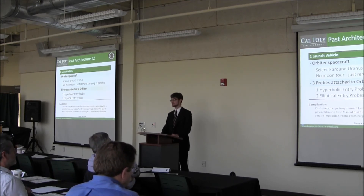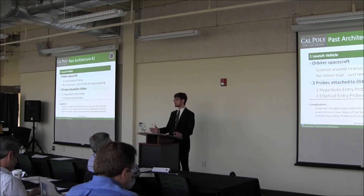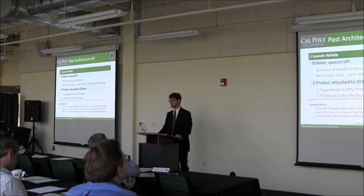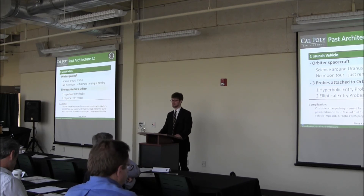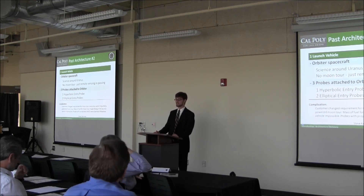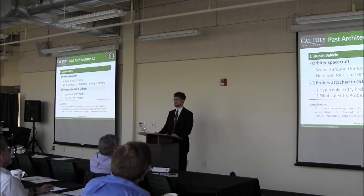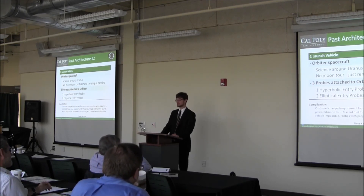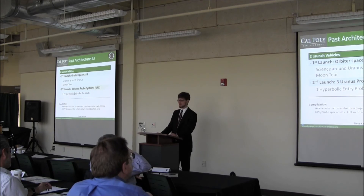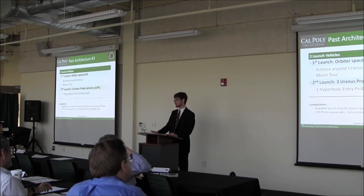In our second architecture, we hand-waved the moon tour, saying we could do remote sensing of the moons from the orbital plane. Our customer wasn't happy about this and instilled the 400 meter per pixel requirement we now have today, which drove our design to change again. We also found that putting a propulsion system on an atmospheric probe with an attitude control system was too complicated and not feasible, so we dropped the elliptical entry probes. Because we could no longer drop probes from an elliptical orbit, we had to put multiple vehicles in the air, as they needed to be dropped on a hyperbolic entrance.